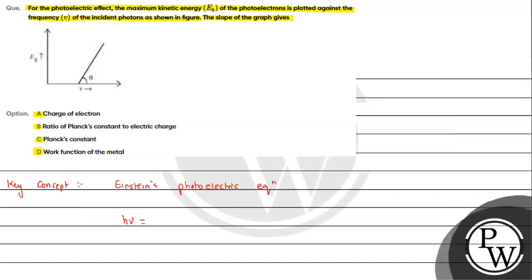That is what we define in Einstein's photoelectric equation: hν, that is the energy of photon, equals work function plus the maximum kinetic energy of electron. This expression is the general expression for Einstein's equation. Now we will manipulate it a bit.